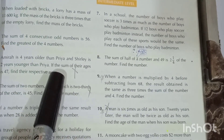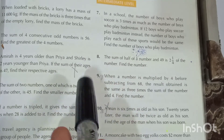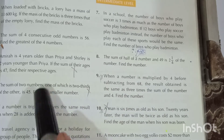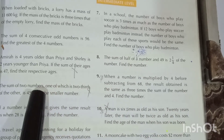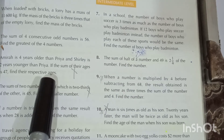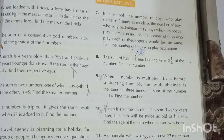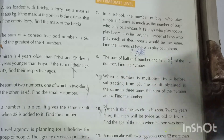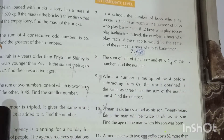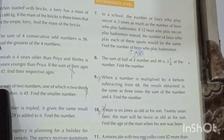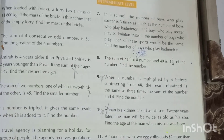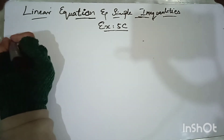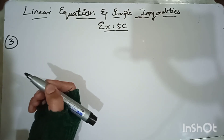Amira is four years older than Priya, meaning we add four to Priya's age. Shirley is two years younger than Priya, meaning we subtract two from Priya's age. Since Priya's age is unknown, we must assume it as a variable. We are given that the sum of their ages is 47.